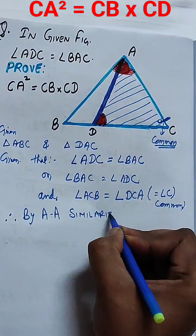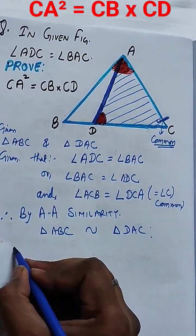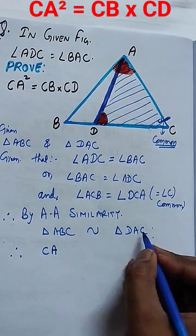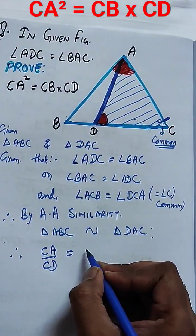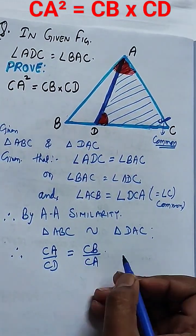So by angle-angle similarity criteria, triangle ABC is similar to triangle DAC. Since these two triangles are similar, we can say CA by CD equals CB by CA.